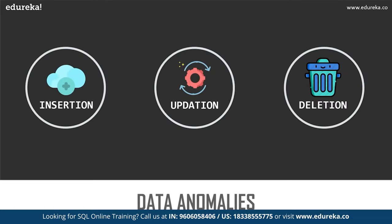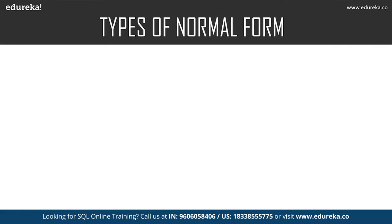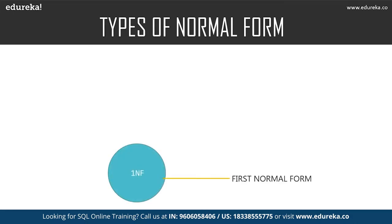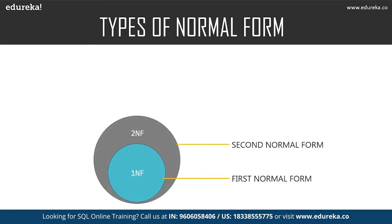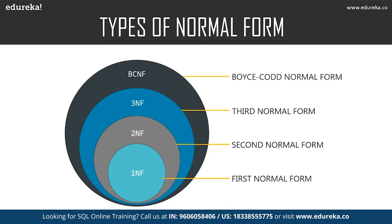These were some of the problems that occurred while managing data. To eliminate all these anomalies, normalization came into existence. There are many normal forms still under development, but let's focus on the essential ones: first normal form, second normal form, third normal form, and Boyce-Codd normal form.